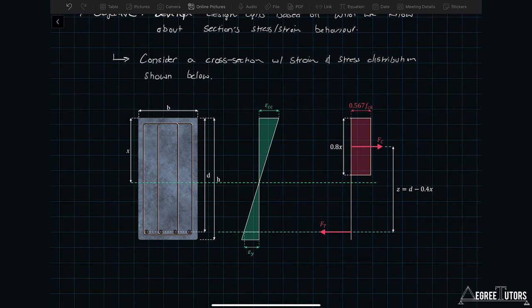We'll just deal in symbols for the time being. We've got a strain distribution shown in green to the right, and of course we have the now familiar ultimate stress distribution at the ultimate limit state. We're noting that we have the ultimate compressive stress 0.567 fck, the depth of the compression block 0.8x where x is the depth of the neutral axis, and our force couple — the tension and compression force — separated by the lever arm z.